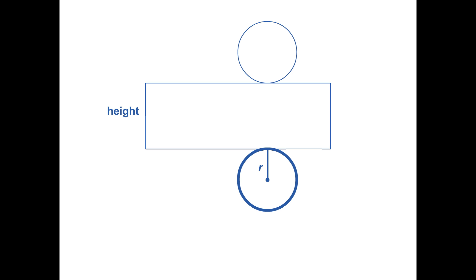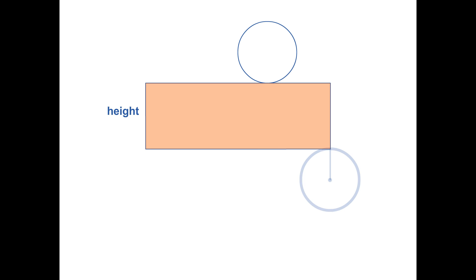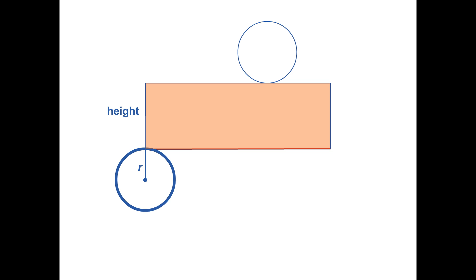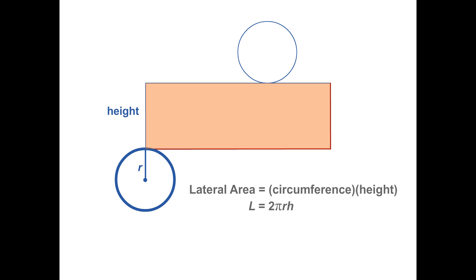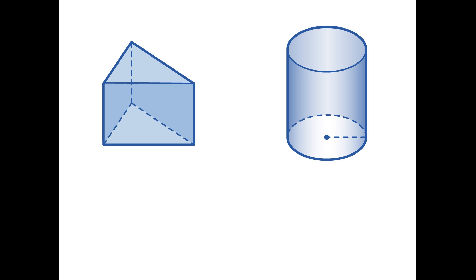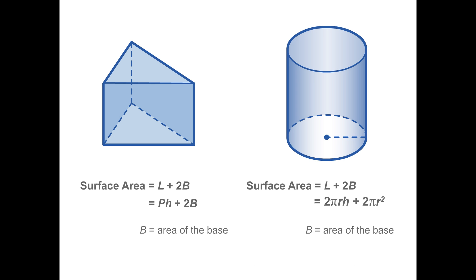Likewise for the cylinder, the length of this rectangle is the circumference of the base. So the lateral area of the cylinder is the circumference of the base times the height, or 2 times pi times the radius times the height. To find the total surface area for each figure, simply add the area of the two bases to the lateral area.